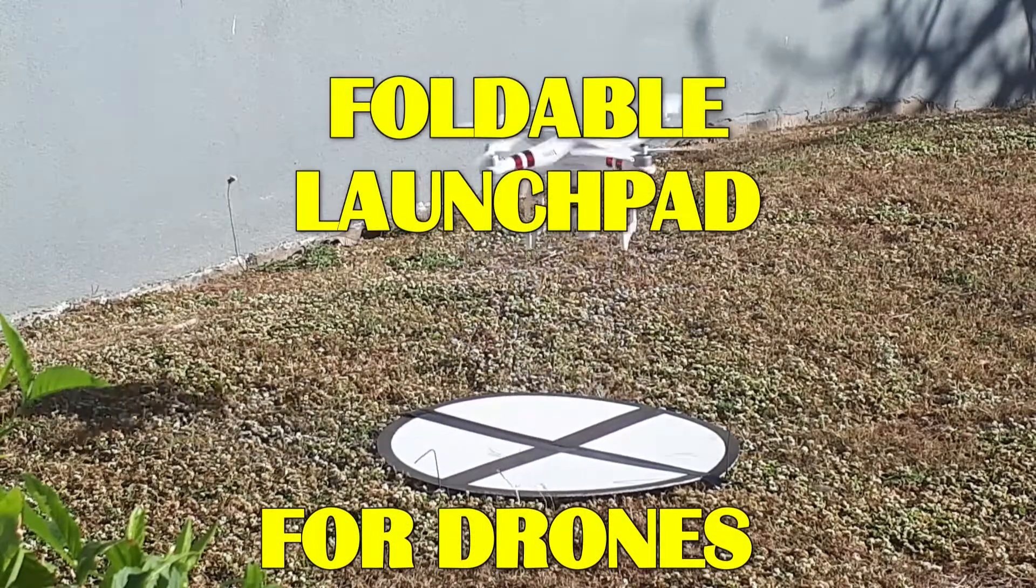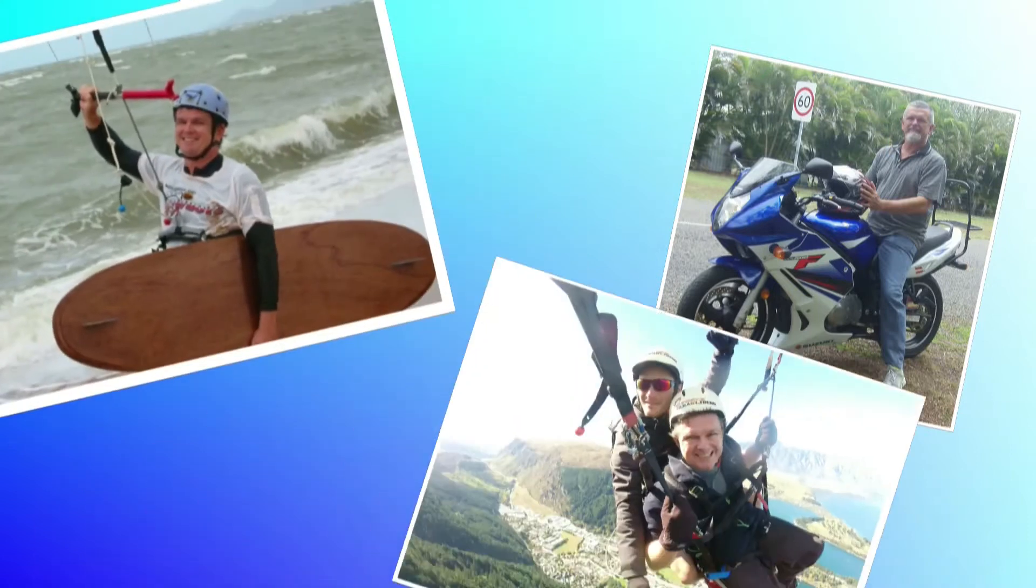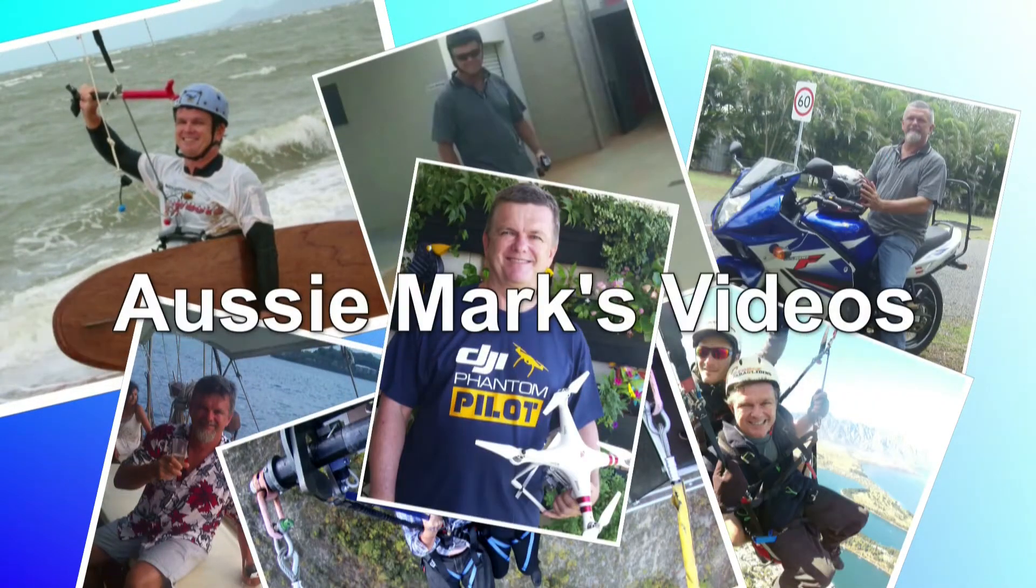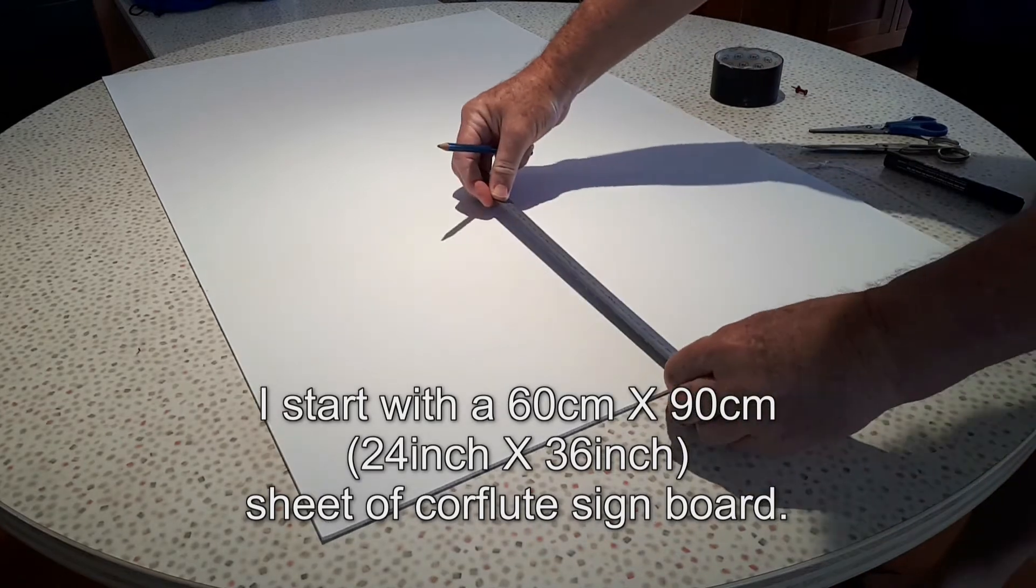Would you like me to show you how I make this foldable landing pad? I started with a 60cm by 90cm sheet of Corflute signboard.